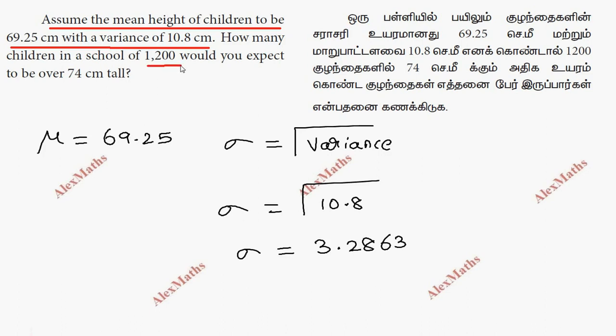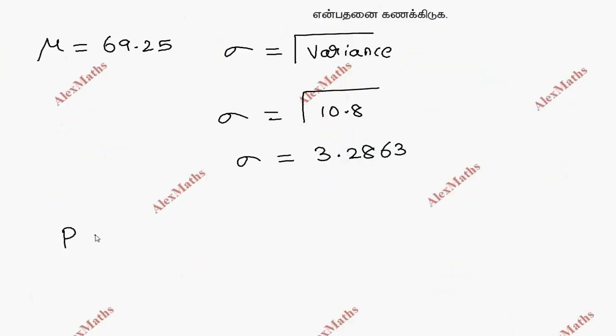The question asks: how many children in a school of 1200 would you expect to be over 74 centimeters tall? We need to find P(x > 74). We convert this to z-score using z = (x - μ) / σ.